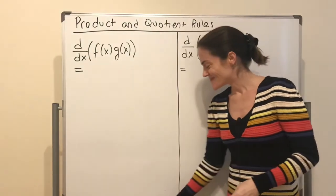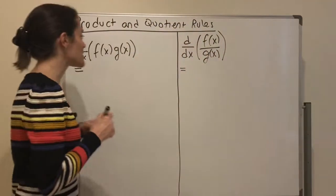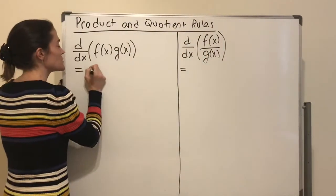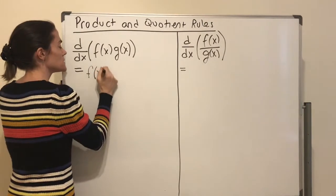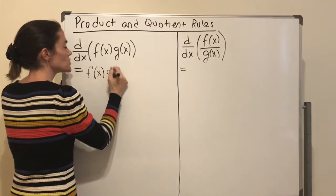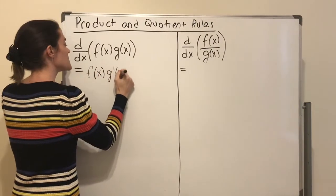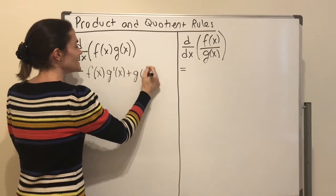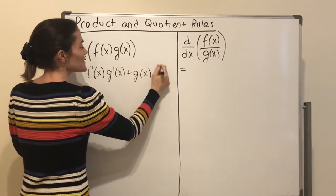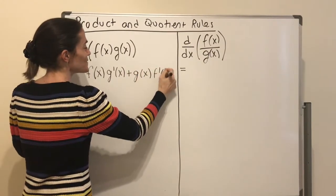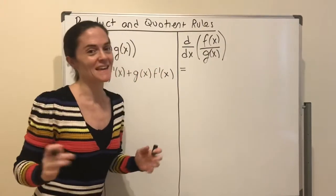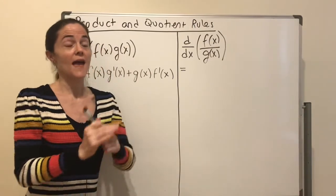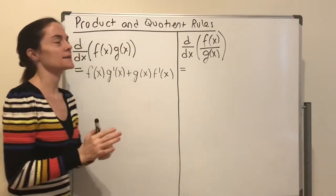What is the product rule? It goes like this: first times derivative of the second, plus second times derivative of the first. Personally, I say that to myself every single time I have a product.